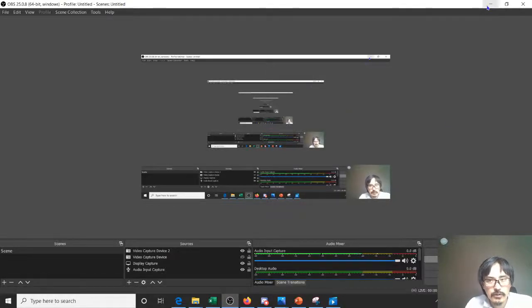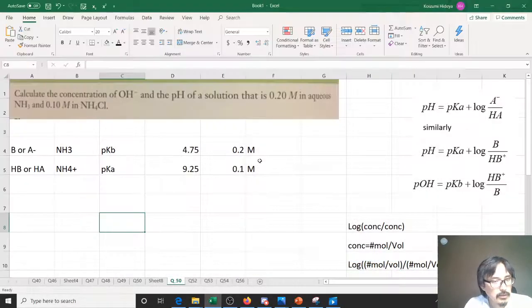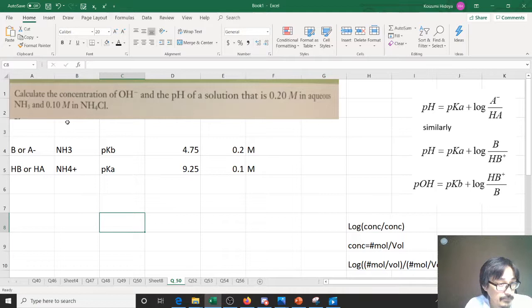All right, let's do question number 51. We're supposed to calculate the concentration of OH- and the pH of a solution mixture of 0.2 molar NH3 and NH4 plus.